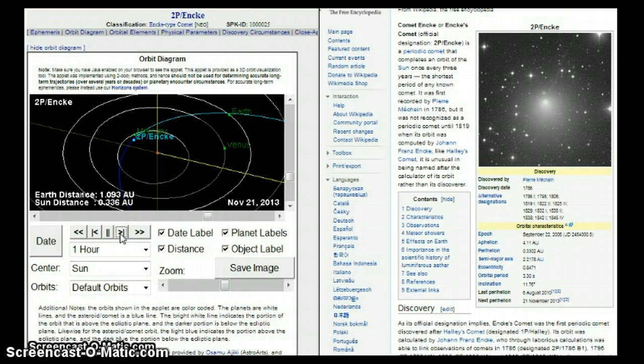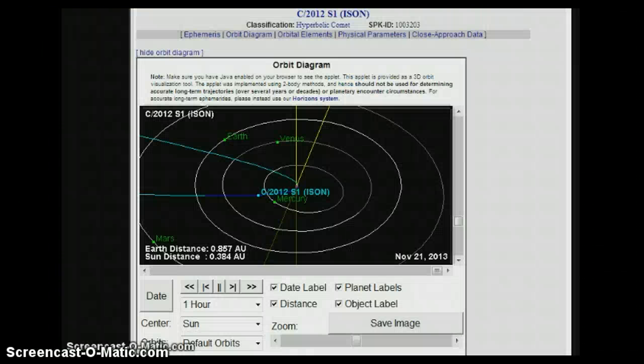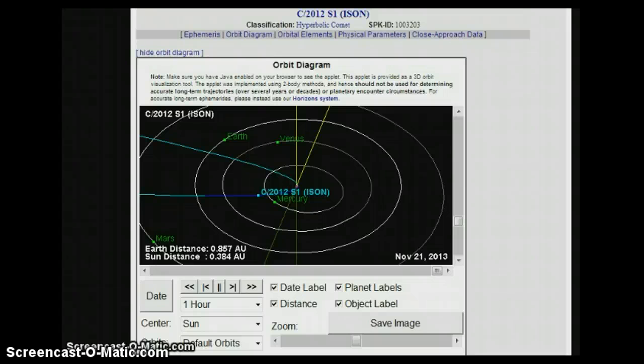So now that we've got this out of the way, let's go check out and see where C/2012 S1 ISON is going to be on this particular day. Now we're over here on NASA's JPL Small Body Database Browser. I've already got it set for November 21st, 2013, and the closest distance to the Sun. Please keep in mind I'm not talking about how close anything is to Earth. I'm talking about where they will be in reference to distance to the Sun.